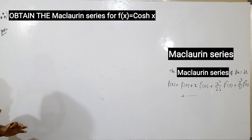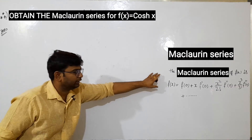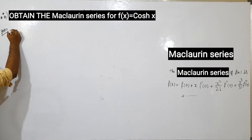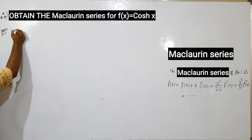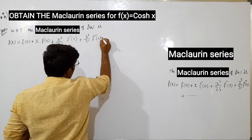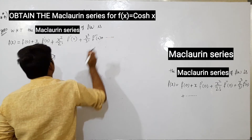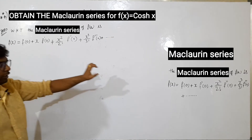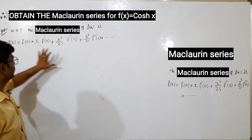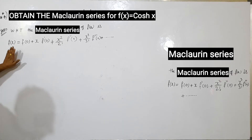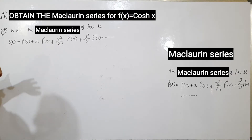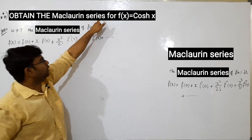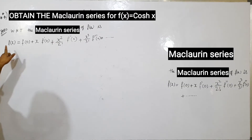We know that the Maclaurin series — we have written it here. So we know that it continues with plus so on up to infinity. This is the formula. This formula has been written clearly for students.